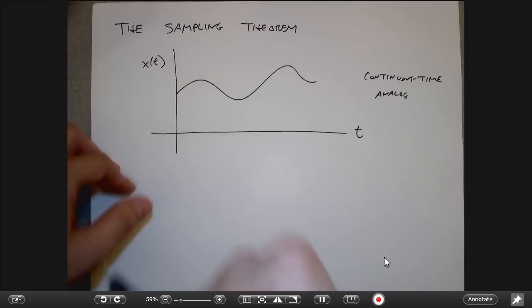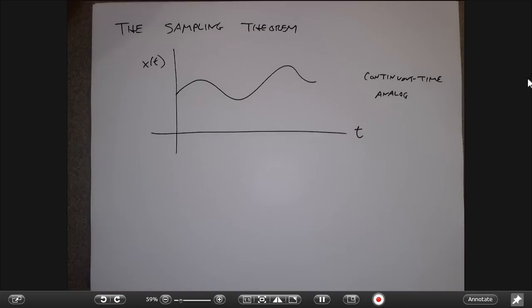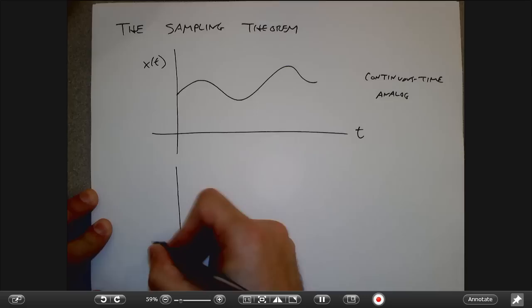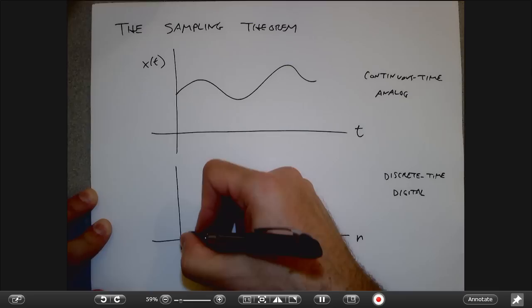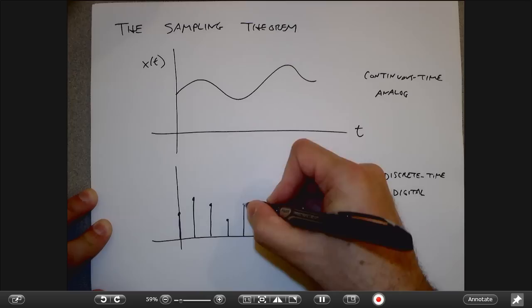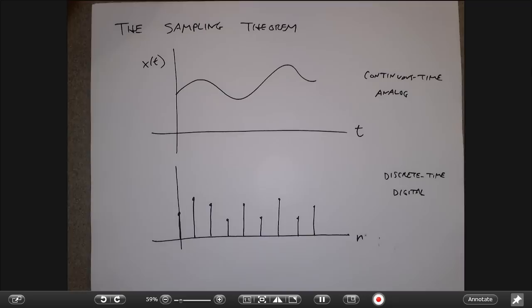In the digital signal processing world, we have to deal with an approximation to this underlying continuous time signal. We do that with a discrete time or digital signal where we get only certain values of the signal at regular units. MATLAB assumes these units are spaced out by one unit on the axis — it thinks you're looking at x[1], x[2], x[3], and so on.